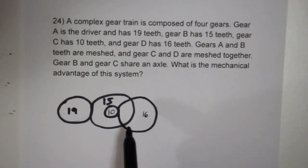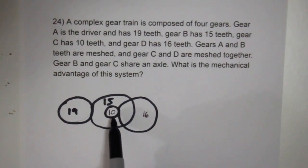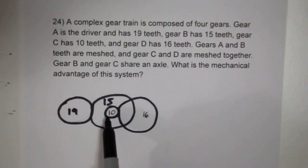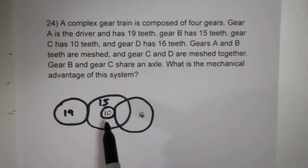Notice that A and B are meshed together, C and D are meshed together, but that B and C share the same axis. So the question becomes, what is the mechanical advantage of this system?